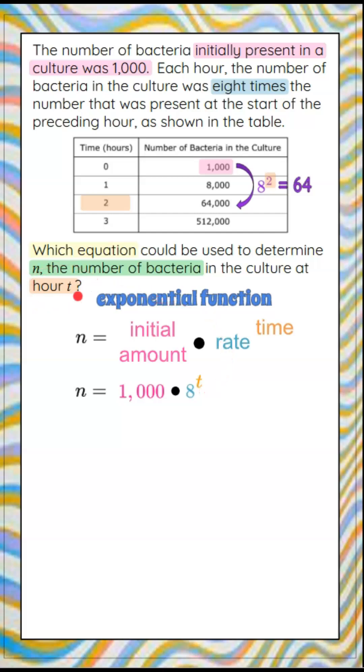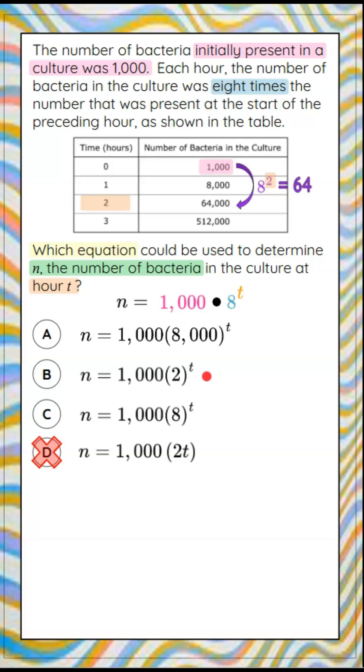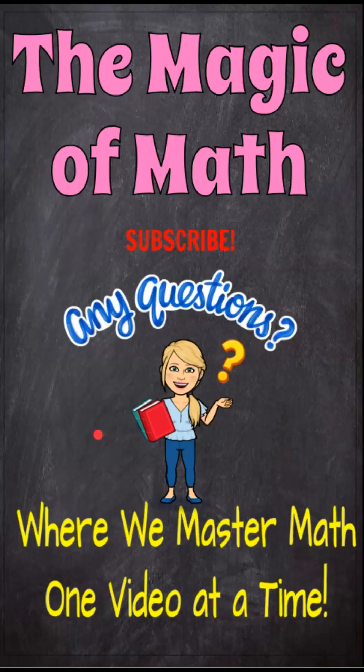So N is equal to our initial amount, 1,000, multiplied by eight to a power of the time in hours. Let's bring our answers back. Here's the exponential growth function we wrote, and we can see that that is answer choice C. Thanks for joining me today at The Magic of Math.